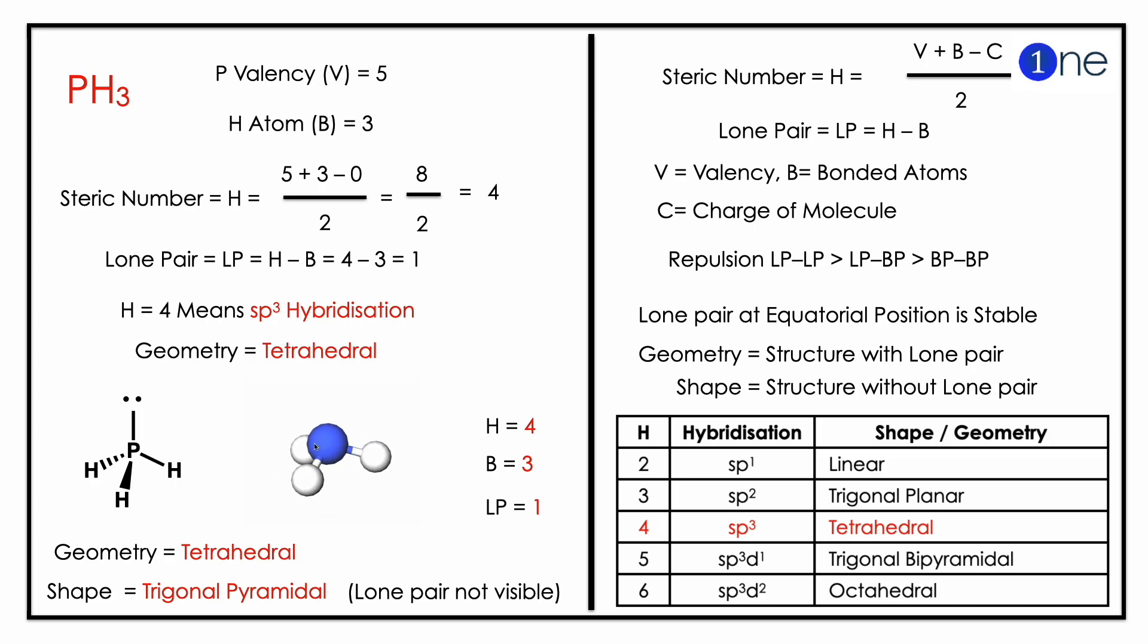But you should know the lone pair. Lone pair will be H - B which gives 1. So H = 4 means sp3 hybridization with tetrahedral shape. Lone pair will be 1, so one lone pair occupies the corner, three hydrogens occupy the corner.